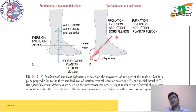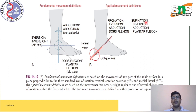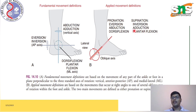The applied movement definitions differ because the axis of the ankle joint is oblique rather than in the usual cardinal planes. This oblique axis produces the combined movements of pronation and supination. Pronation includes dorsiflexion, abduction, and eversion — remembered by the mnemonic DABe (D for dorsiflexion, AB for abduction, E for eversion). Supination includes plantar flexion, adduction, and inversion — remembered by the mnemonic PADi (P for plantar flexion, AD for adduction, I for inversion).